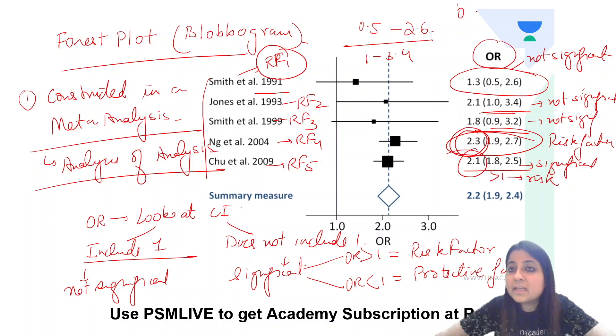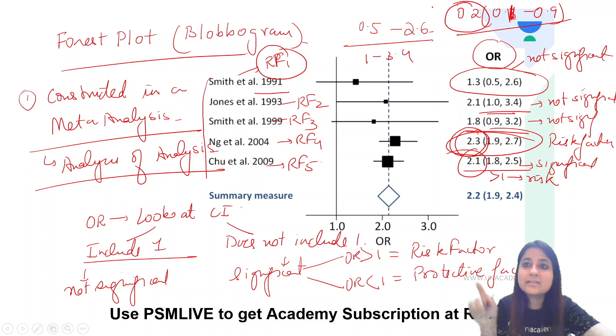If I had given you something like odds ratio 0.2, confidence interval 0.1 to 0.9. Now, here also one is not included, so this is statistically significant. But here the odds ratio is less than 1, so it is a protective factor.